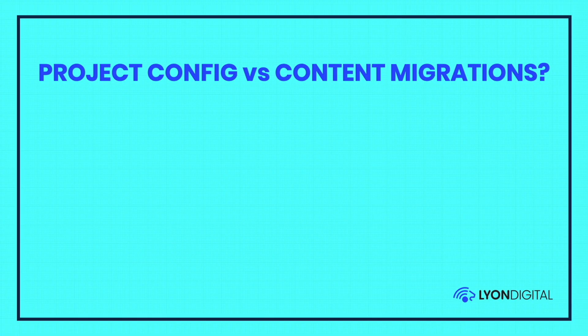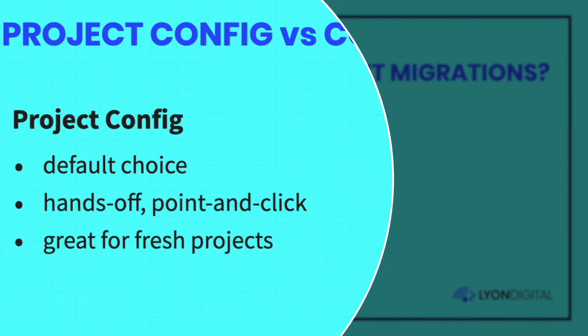Now that project config is a default opt-in since Craft 3.5, what's the relationship between project config and content migrations? Nine times out of ten, you should be using project config to manage changes to your project. As you change things in the UI it writes to those YAML files in your config project directory — it's the most hands-off way. As you're pointing and clicking, changes get made, and as you move between environments they get applied. You can even copy the directory out of your project config into a new project to jumpstart development.